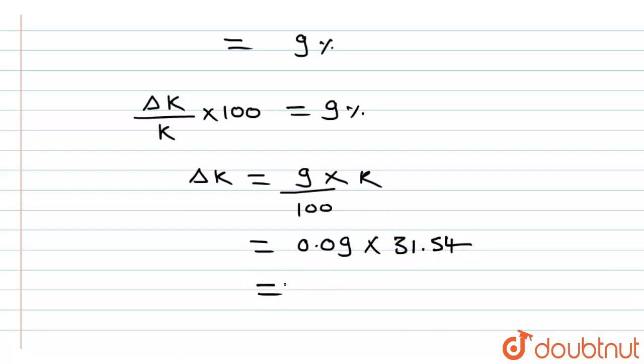So here it will be equal to 0.09 into the value of K that is 31.54. On solving this, we get the value of error in the measurement of spring constant as 2.87. On rounding it, it will be 2.9. And the unit of spring constant is Newton per meter. So this is our final answer. Thank you.